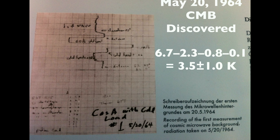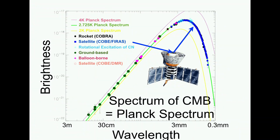They didn't know what this was, so they called professors at Princeton, who figured out it was coming from perhaps the fireball universe. One measurement at a single frequency doesn't tell you much — you need measurements at various frequencies to confirm this thing really comes from the fireball universe, because those measurements are consistent with the Planck spectrum, which is the spectrum of a fireball.